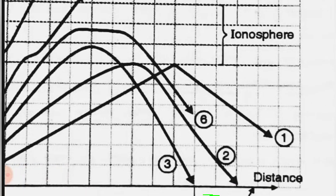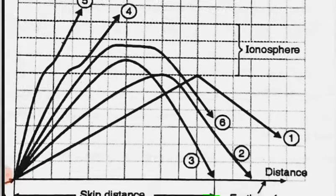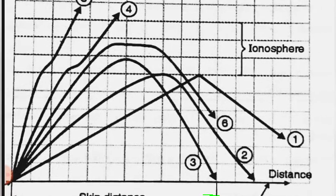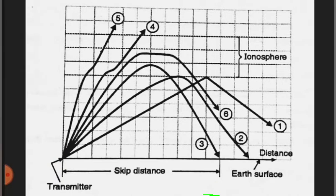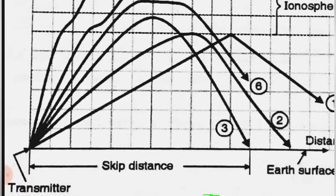Due to the reduction in angle theta, the rays return at points which are more and more close to the transmitter. In other words, with a decrease in angle theta, the skip distance decreases.